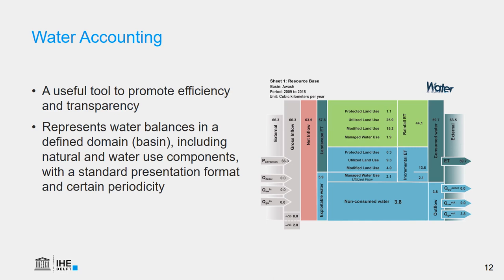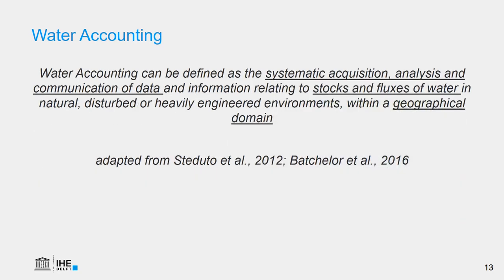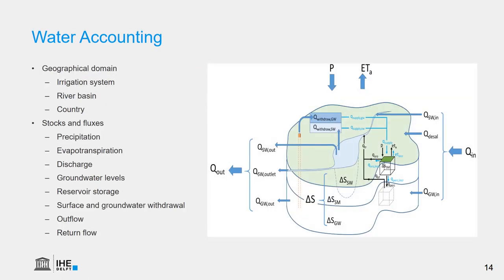The domain can be an irrigation scheme, a river basin, another region or country, and the time step can be monthly, seasonal, or yearly. A more formal definition of water accounting is the systematic acquisition, analysis, and communication of data and information related to stocks and fluxes of water in natural, disturbed, or heavily engineered environments within a geographic domain. The geographic domain can be as small as an irrigation scheme or a river basin, up to any administrative region including countries. Fluxes and stocks include precipitation, evapotranspiration, and flows and storage.